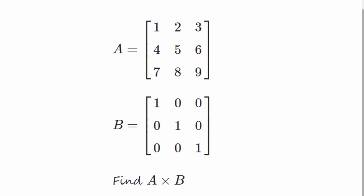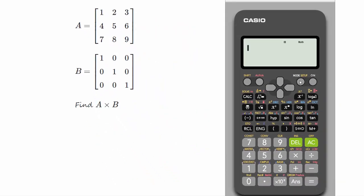First we need to enter the data into the calculator, so we say mode 6 for matrix. Now we're going to enter matrix A, so we'll type 1. It's a three by three matrix, so we'll type 1 again.